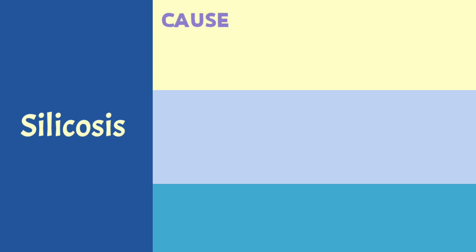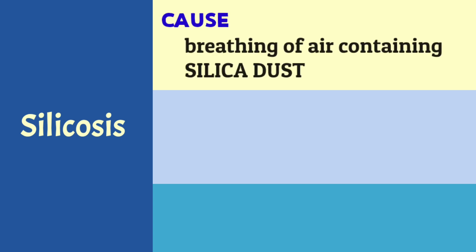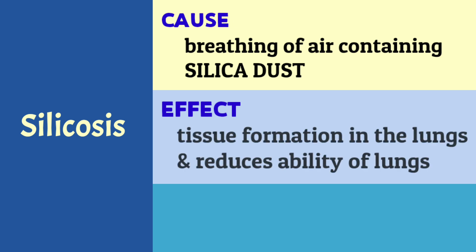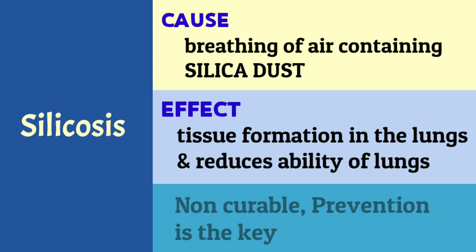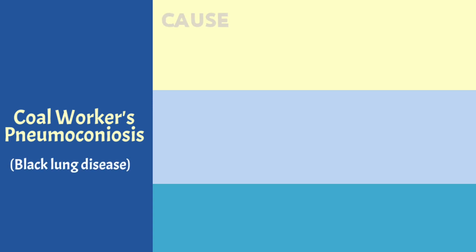Some of the diseases that come under pneumoconiosis are silicosis, coal workers' pneumoconiosis, and asbestosis. Silicosis is a lung disease caused by excessive breathing of dust particles containing silica. Silica dust causes fibrous or scar tissue formation in the lungs, which reduces the ability of the lungs to work and extract oxygen from air. There is no cure for this disease — the only way is to prevent it from happening.